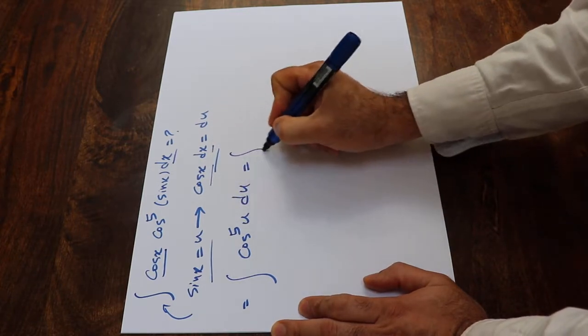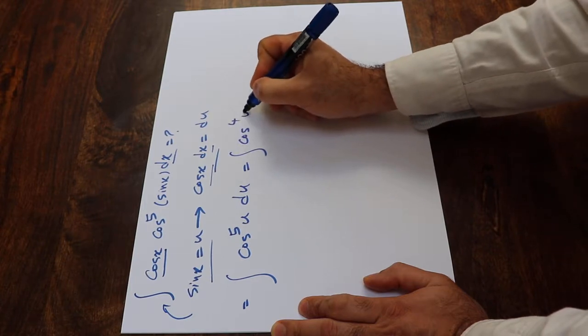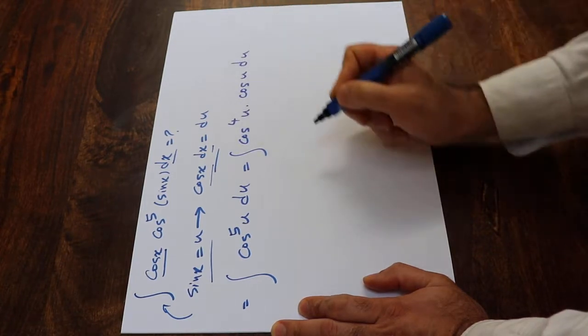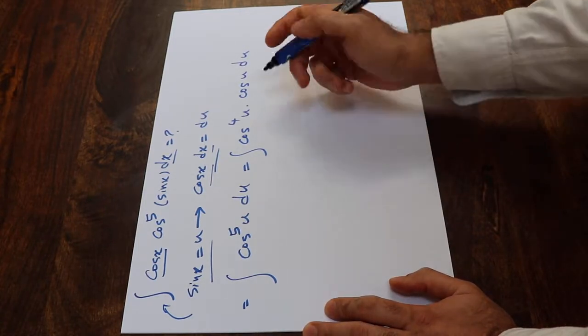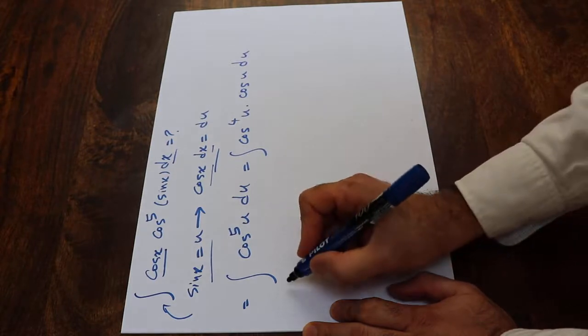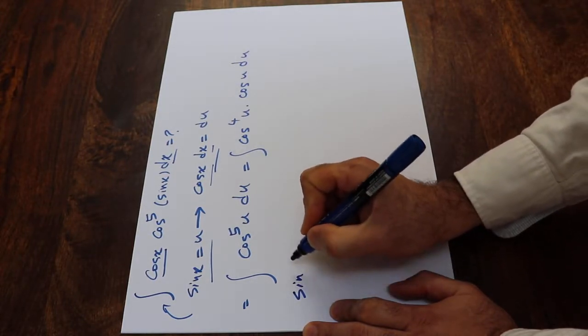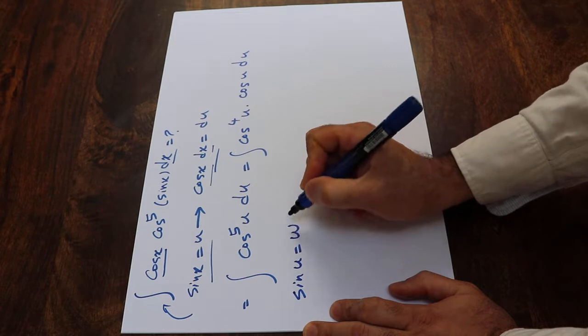This integral you can rewrite as cos⁴(u) times cos(u)du. To solve this integral now, you should apply the substitution rule one more time. Let's define sin(u) as w.